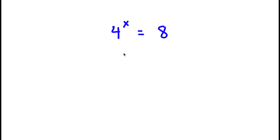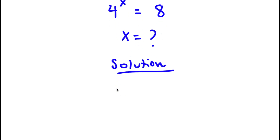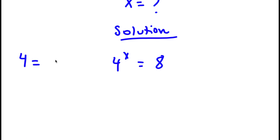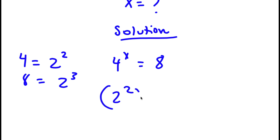So in this problem, I have 4 to the power of x is equal to 8, and I want to find the value of x. First start with 4 to the power of x is equal to 8. And 4 is the same thing as 2 to the power of 2, and 8 is the same thing as 2 to the power of 3. So if I replace 4 with 2 to the power of 2 and 8 with 2 to the power of 3, I get 2 to the power of 2 to the power of x is equal to 2 to the power of 3.